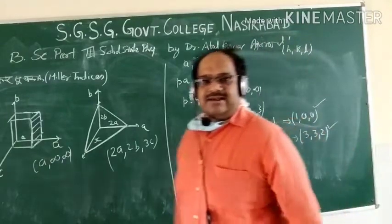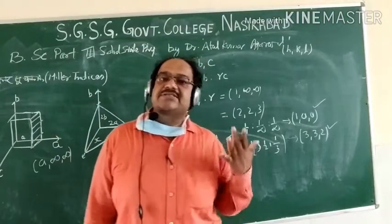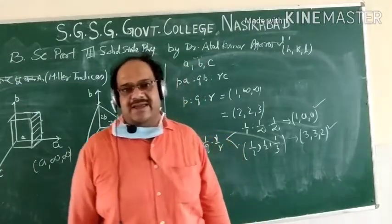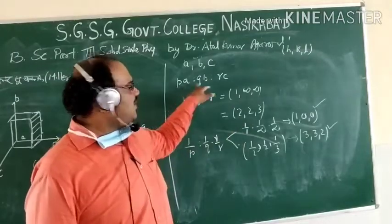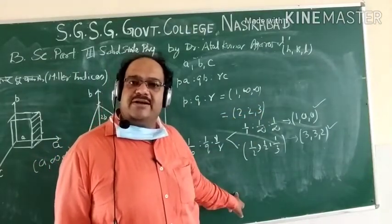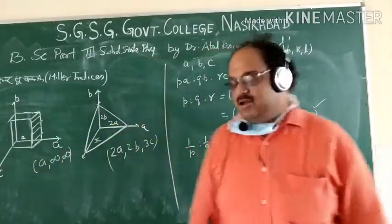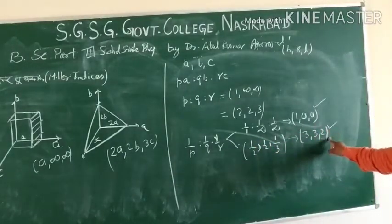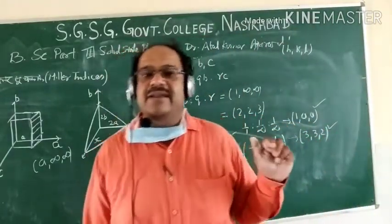Miller indices is a kind of representation in which we find the crystal plane. We define the primitive axis, take the intercepts as multiples of ABC, find the PQR ratio, take the reciprocal, and then take the LCM of the denominators of each quantity and multiply by it. So we get a whole number answer — these are the Miller indices.